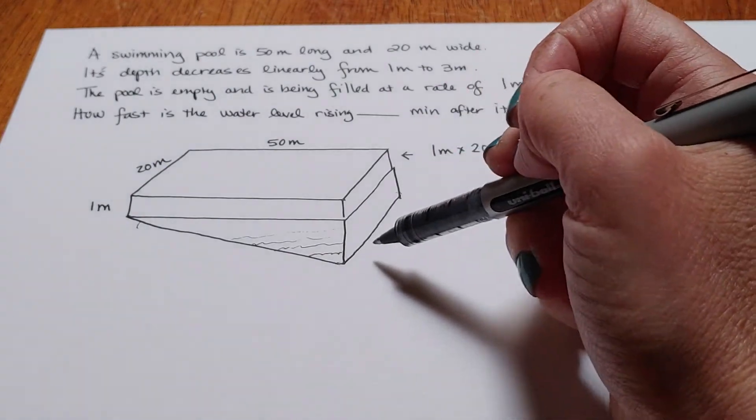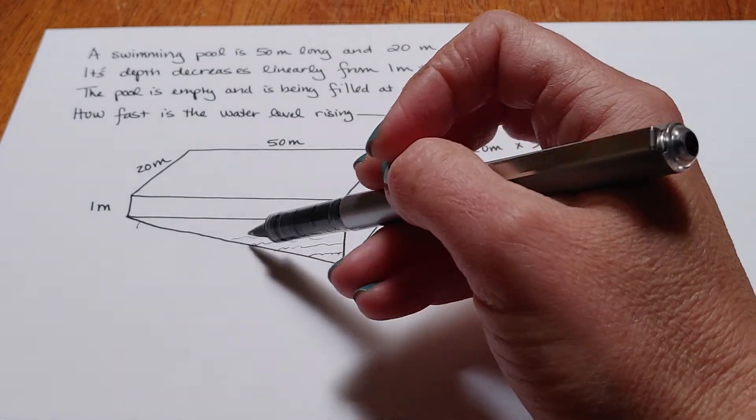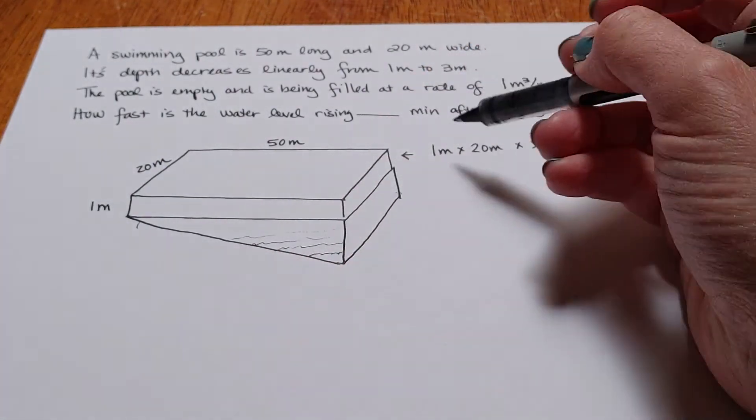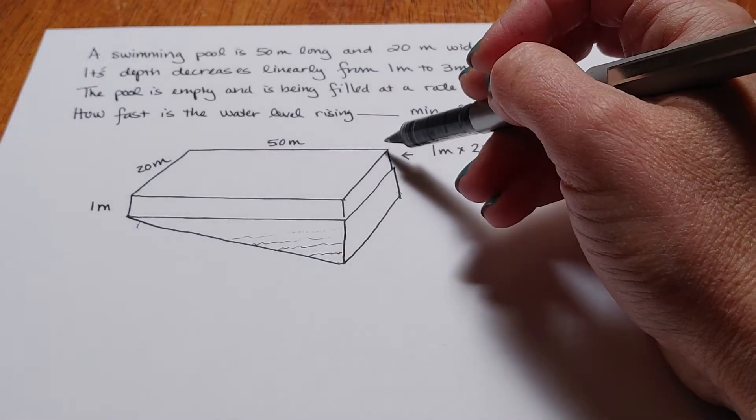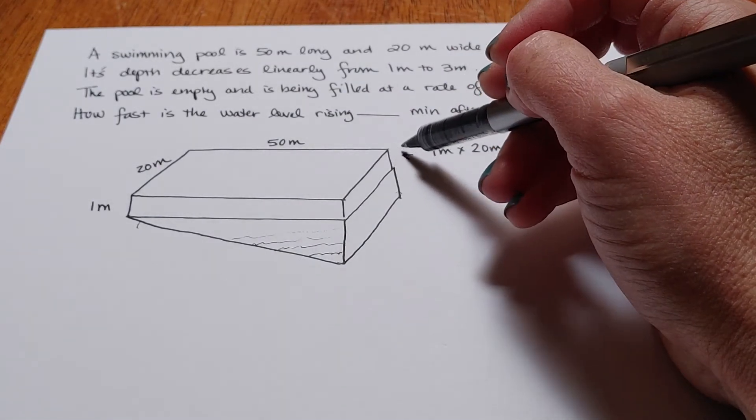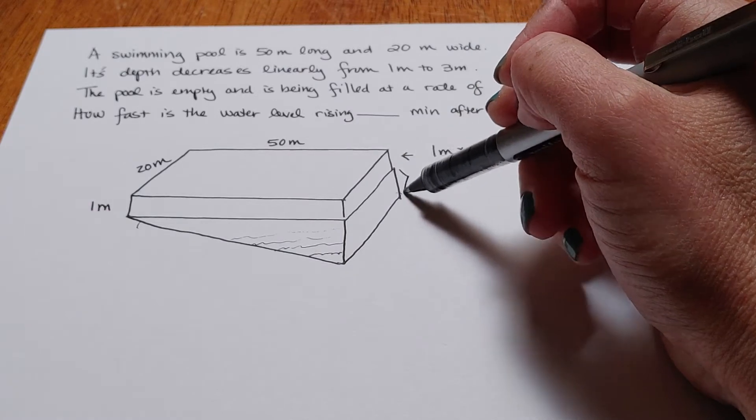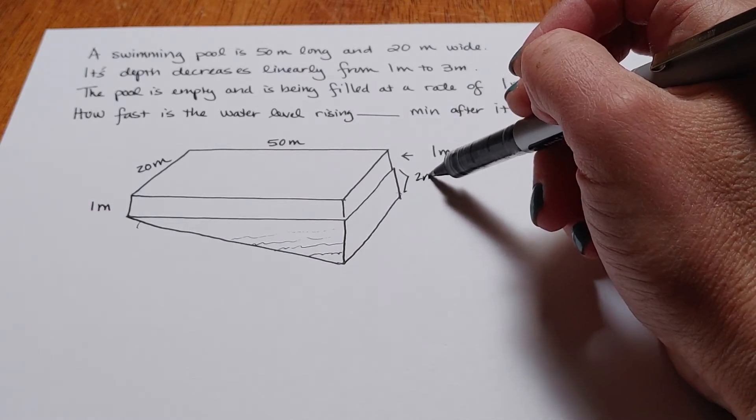So what I have is I have basically this width is changing. Now, if the whole thing is 3 meters deep and this top wedge is 1, then that means that this has got to be 2 meters.